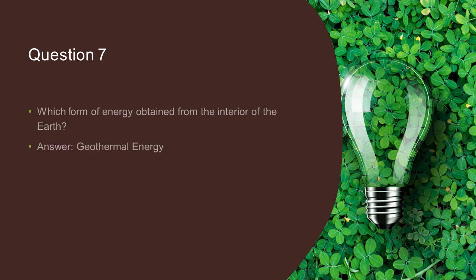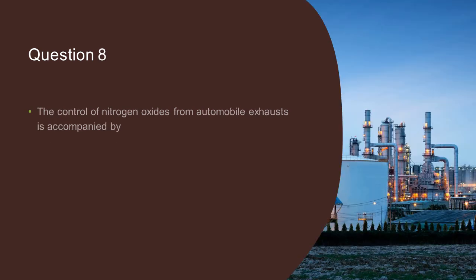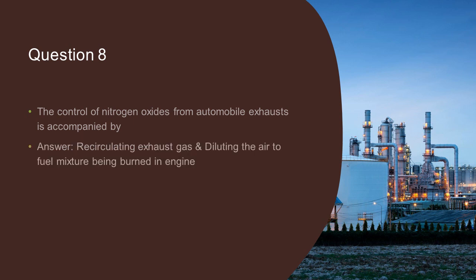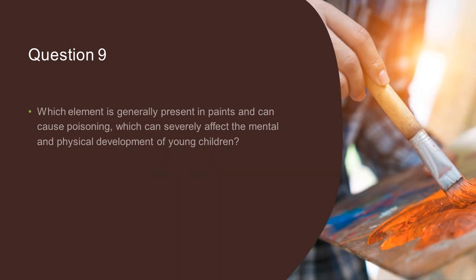Question 6: Which form of energy is obtained from the interior of the earth? The answer is Geothermal Energy. Question 7: The control of nitrogen oxides from motor vehicle exhaust is accomplished by recirculating exhaust gas and diluting the air-to-fuel mixture being burned in the engine.